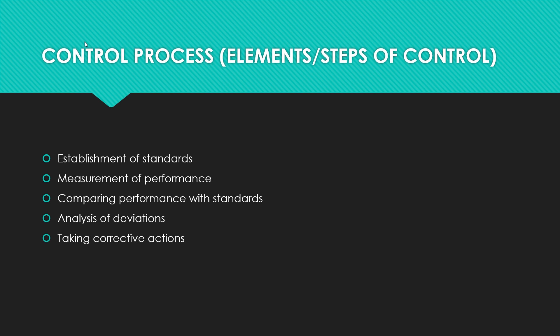Second step: measurement of performance — this involves measuring performance in respect of a work in terms of control standards. Management becomes easy when the concern has clearly laid down its objectives and established standards. If measurement detects deviations at the earliest, appropriate action can be taken on time; if not possible, deviations should be detected as early as possible. Third step: comparing performance with standard — this involves comparing actual performance with standard performance, which will reveal the deviation between actual and desired results. Comparison is easy when standards are quantitative; if intangible, personal observations are used.